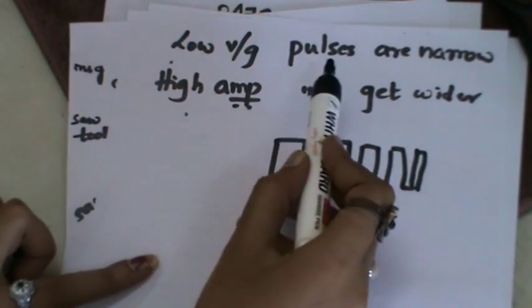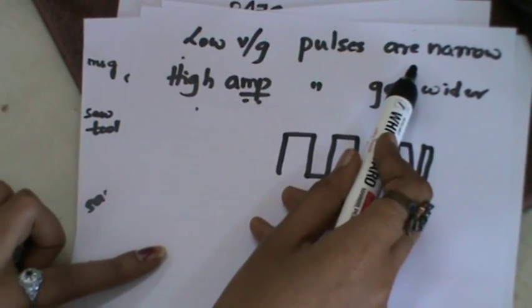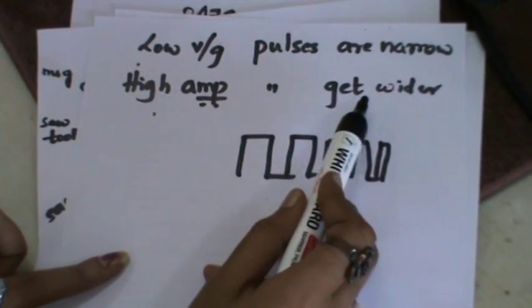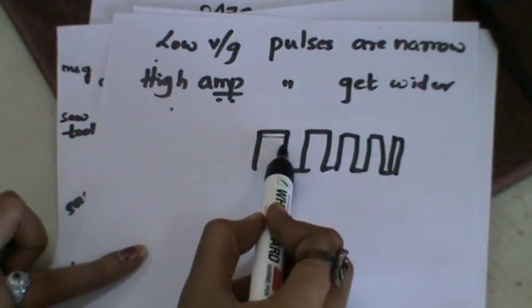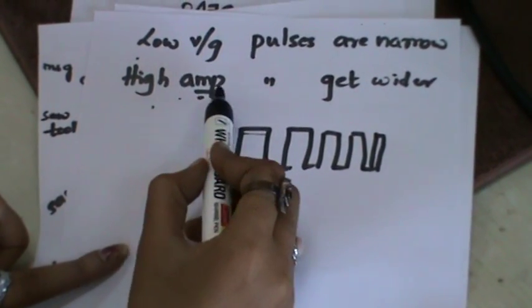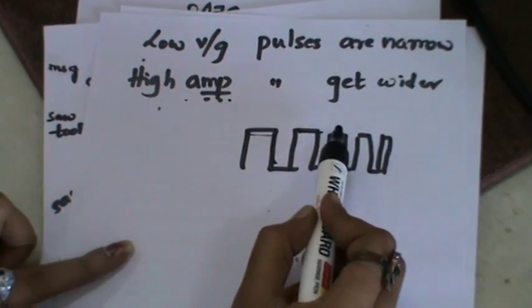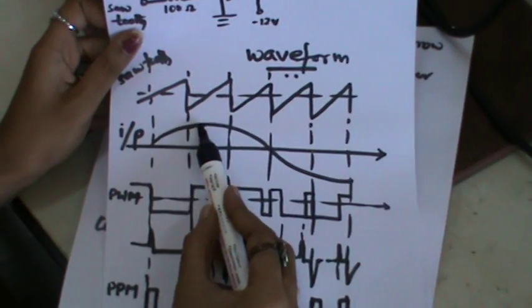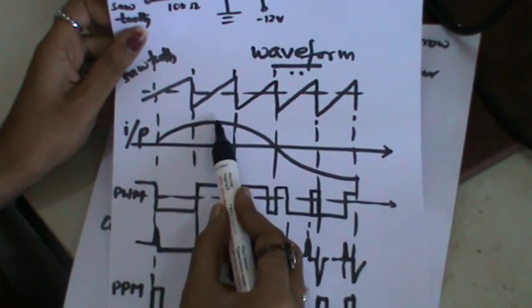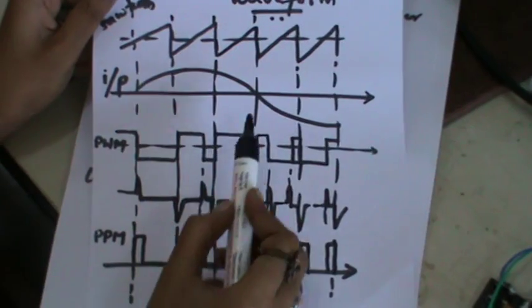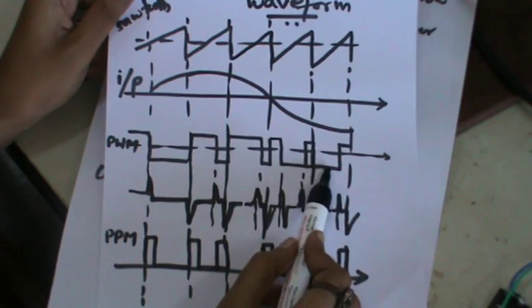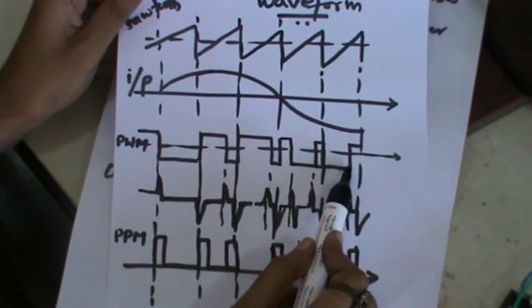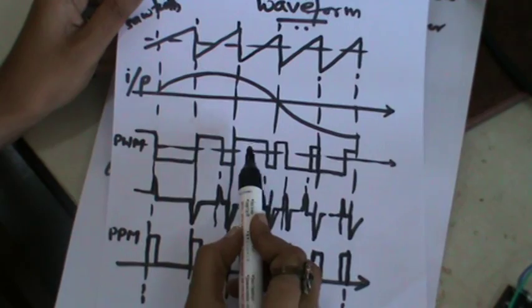Low voltage pulses will be narrow whereas high amplitude pulses will get wider. When the amplitude of the message signal is increasing, the width will be more, whereas when the amplitude of the message signal is decreasing, the width will also be narrower. This is your PWM signal.